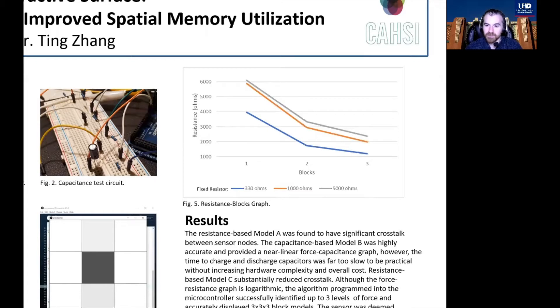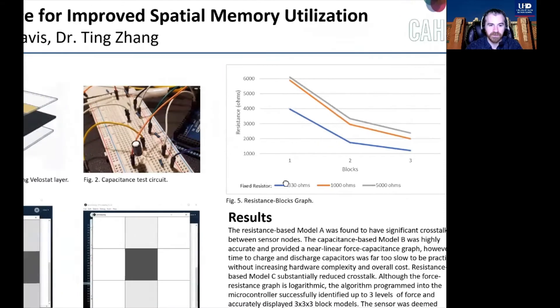We next attempt to produce more linear readings by measuring capacitance instead. I created a new circuit that introduced a capacitor to each voltage divider, which can be seen in figure 2.